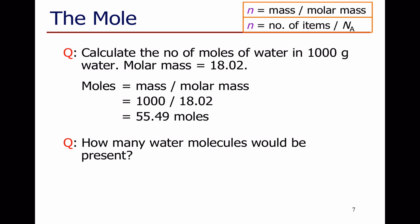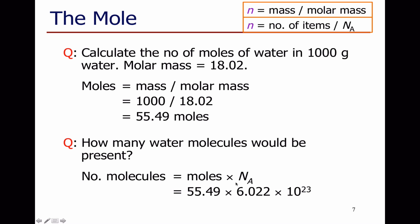How many molecules would this represent? The number of molecules — the number of particles — is the number of moles times Avogadro's number. I just worked out 55.49 moles, multiplied by Avogadro's number, giving 3.342 times 10 to the 25 molecules — a huge number of molecules. If you're not clear about the number of significant figures I've been using here, review the significant figures video and tutorial.